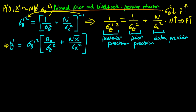Finally, if sigma x squared declines — in other words, our likelihood has a lower innate variance — then that also leads to an increase in precision. So that's the intuition behind the posterior variance.